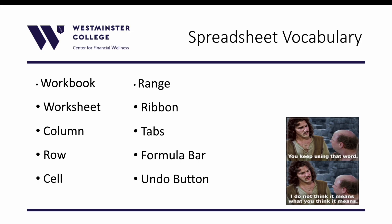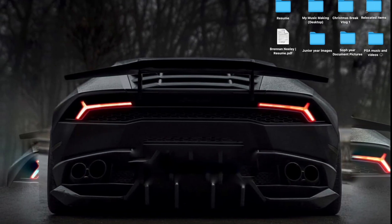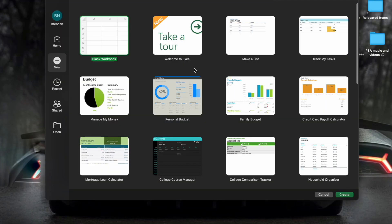Let's talk about spreadsheet vocabulary. We have different names specific to spreadsheets and I want to make sure we're all on the same page about what different parts of a spreadsheet are called, so that when we're making references to different areas nobody gets lost. To do this I'm going to open an Excel spreadsheet. I'll use Excel, though it's similar in most spreadsheet software.